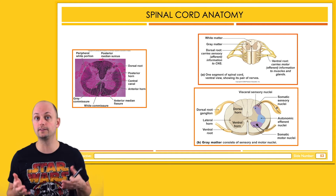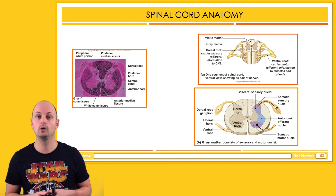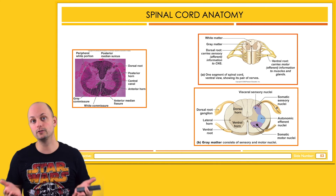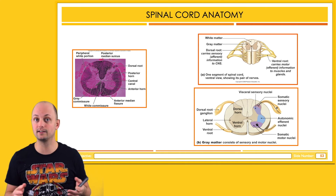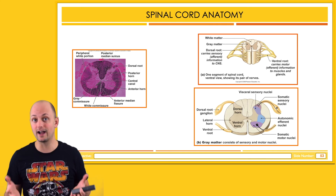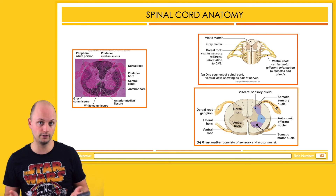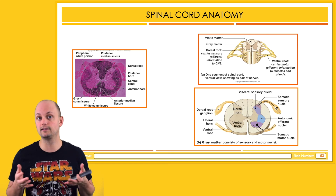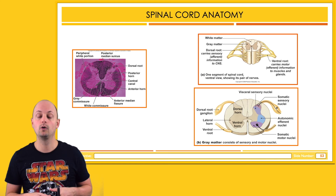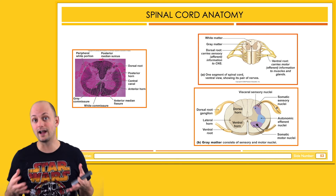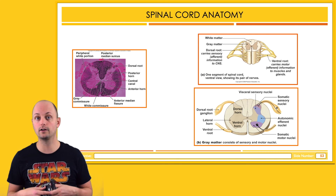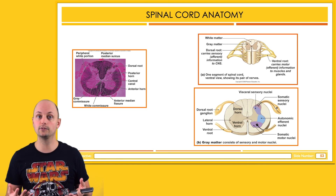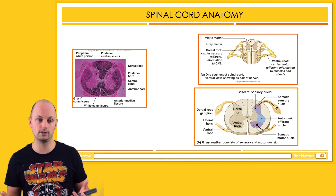One other note: in the brain, we refer to the white matter as fibers, but in the spinal cord, we refer to the white matter axons as tracks when they're traveling out in the periphery. In our next unit, which is on sensation, we'll be talking about some specific tracks that are involved in sending or receiving different types of information.